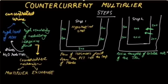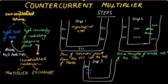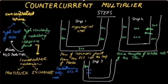After step 2, the thick ascending limb is at 200 milliosmoles per litre, the medullary interstitium is at 400 milliosmoles per litre, and the descending thin limb is at 300 milliosmoles per litre. In step 3, there is equilibrium between the descending thin limb and the medullary interstitium. The descending thin limb acts like a sieve — it allows water to pass through but not solutes. As a result, the descending thin limb equilibrates to 400 milliosmoles per litre, while the thick ascending limb remains at 200 milliosmoles per litre and the medullary interstitium is at 400 milliosmoles per litre.